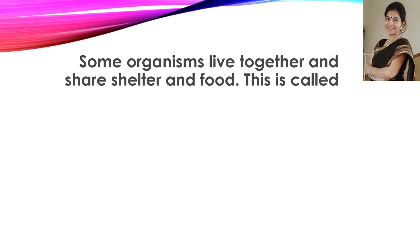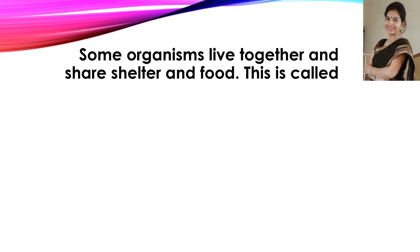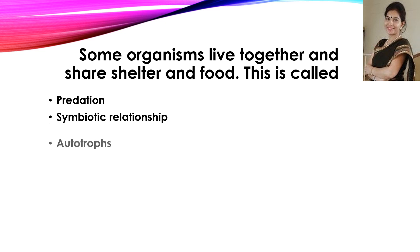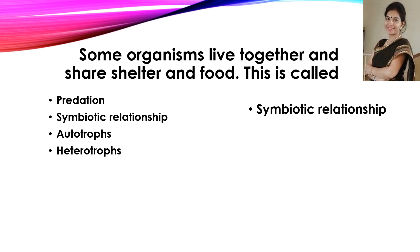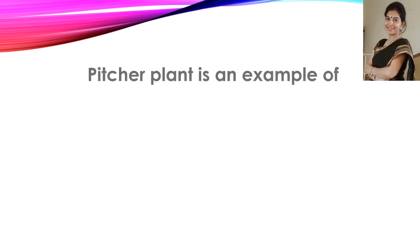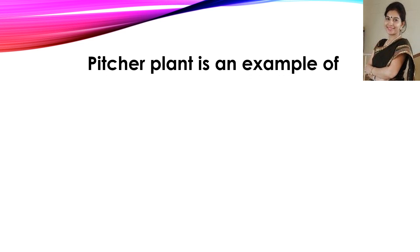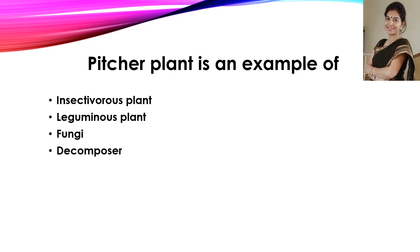The next question: some organisms live together and share shelter and food — this is called? Choose out of these four options. The correct answer is symbiotic relationship. Now, pitcher plant is an example of — and the correct answer is insectivorous plant.